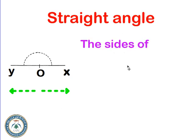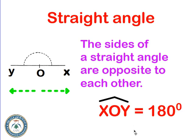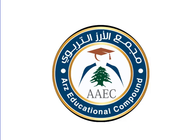A straight angle has its sides opposite to each other. XOY equals 180 degrees — OX goes one way and OY goes the other way. If we have points, X, O, and Y are collinear. The measure is 180 degrees, forming a straight line. This is the last type of angle.